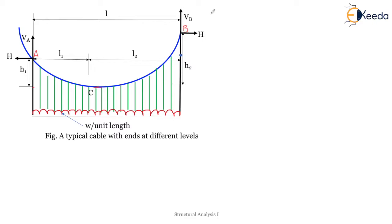The horizontal reaction is H. A very important point: a cable can take only axial force — it cannot take bending moment or shear force. Hence, at the lowest point C, the axial force equals H and there is no vertical force at that point.